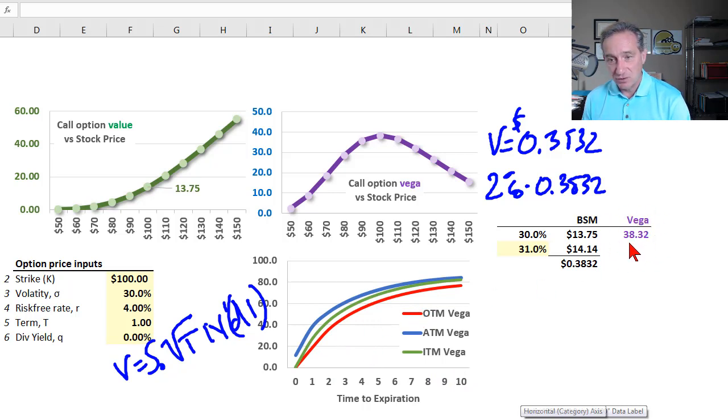I've got a Vega of 38.32, or if we express it per percentage point, it's 0.38 or 38 cents, for a one-year term at the money. If we increase the term, we're increasing the Vega. Intuitively, the longer the term on the option, the greater the sensitivity of the call's price to a change in volatility.